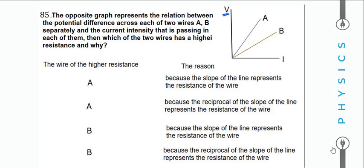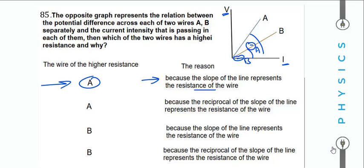A graph between potential difference V and current I for two wires A and B. The slope represents resistance. The wire with the higher angle (θ_A > θ_B) has the higher slope and thus higher resistance. Choose the graph where wire A has greater slope — that's the correct answer.